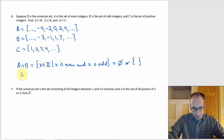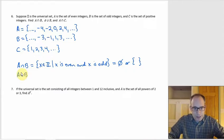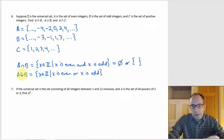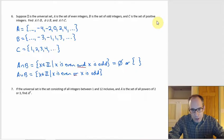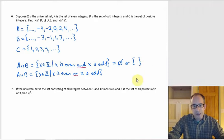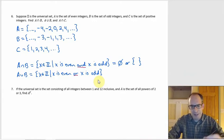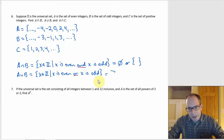Then A union B — in set builder notation: all x in Z such that x is even OR x is odd. The key is that intersection translates to 'and' and union translates to 'or.' Even or odd covers everything, because every integer is one or the other — there's no third option. So A union B is all integers.